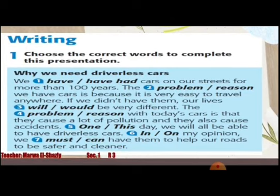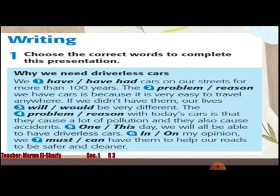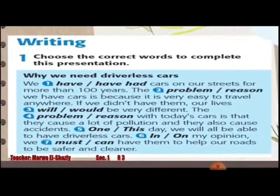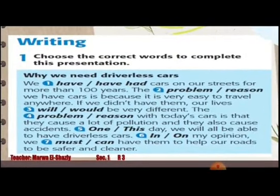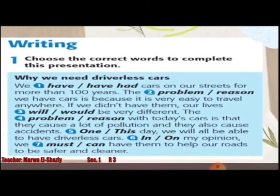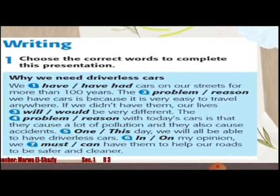The, number four — problem or reason — with today's cars is that they cause a lot of pollution and they also cause accidents. Five: One or this day we will be able to have driverless cars. Six — In or on — my opinion, we, number seven — must or can — have them to help our roads to be safer and cleaner.